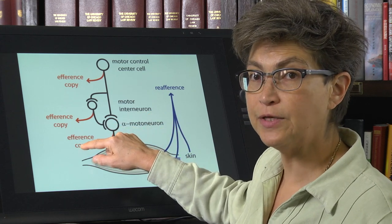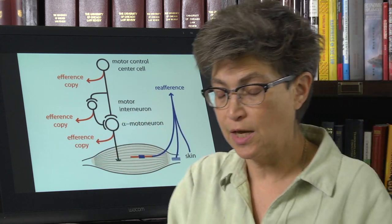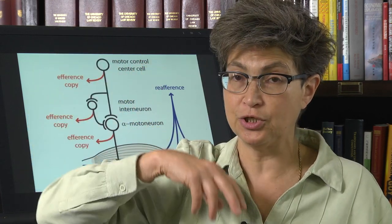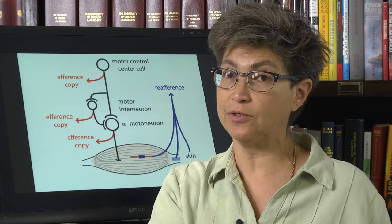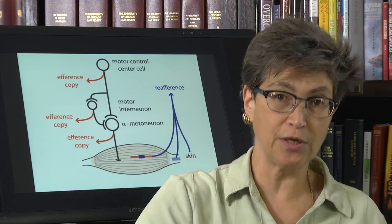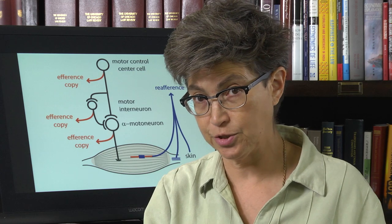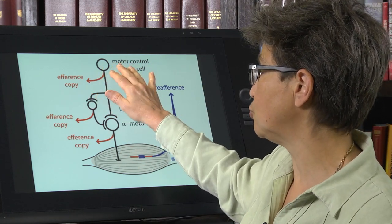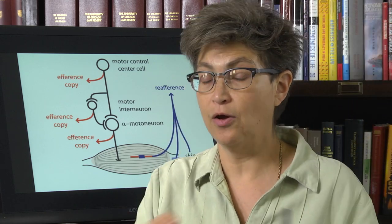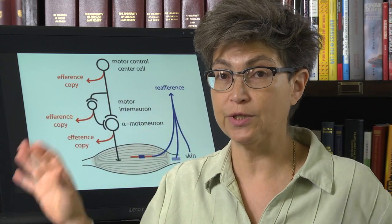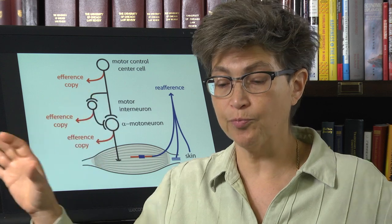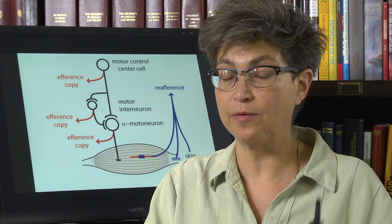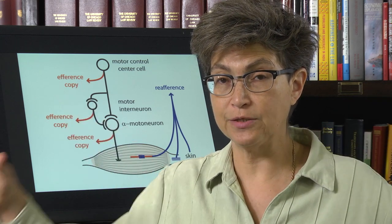These cells in the ventral horn are called spinal border cells — they sit on the border of the ventral horn and send a copy of the motor neuron's message to the cerebellum. The efference copy from motor control centers and all areas of cerebral cortex projecting to the cerebellum comes in through the pontine nuclei.